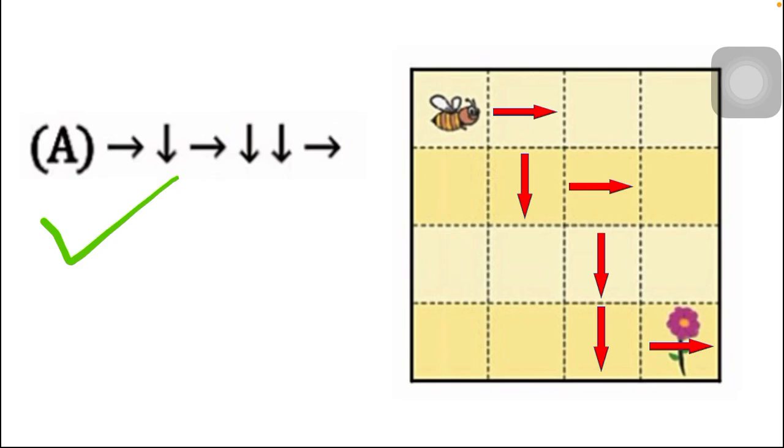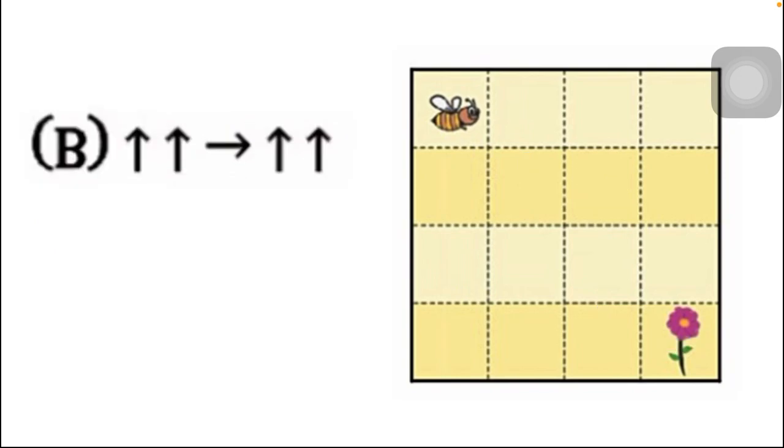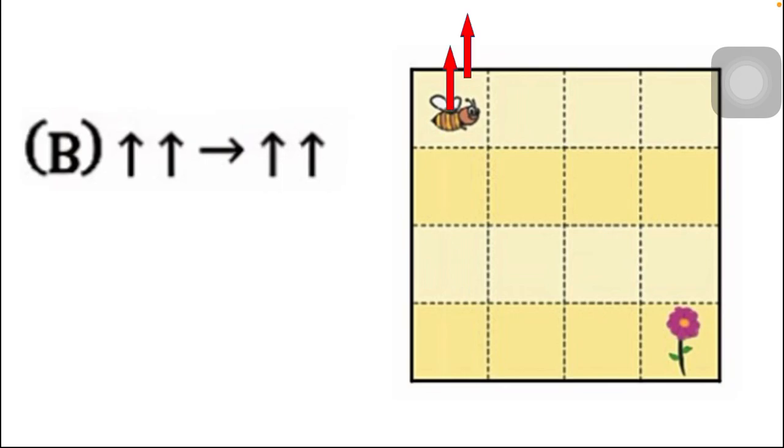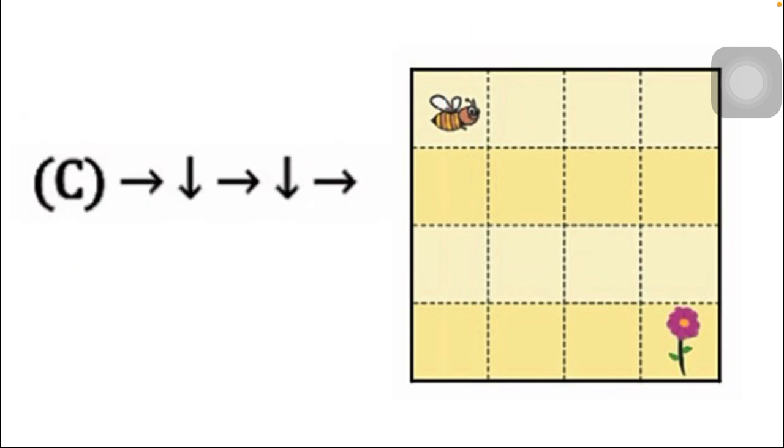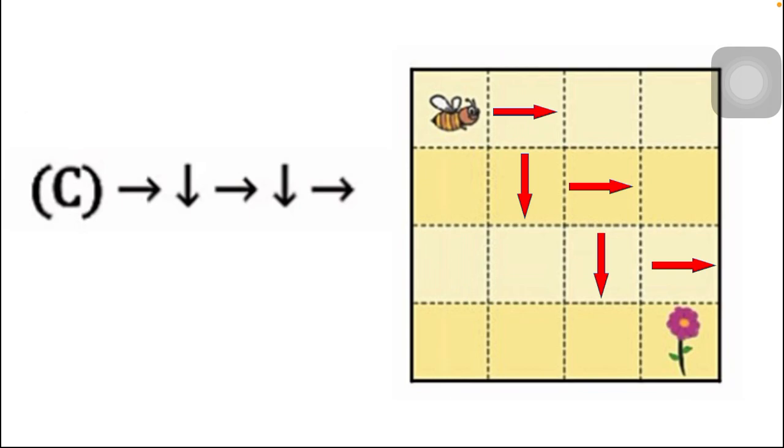Option B has five arrows. If you place the first two arrows, look at the right side of the slide - they are going outside of the box, so this option is incorrect. Option C also has five arrows. If you place it like this - right, down, right, down, right - there is no arrow going towards the flower, so this option is not correct.